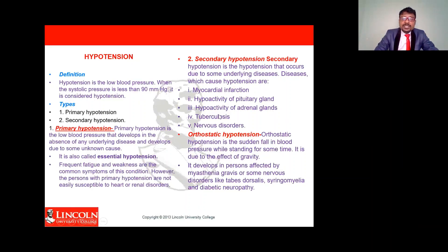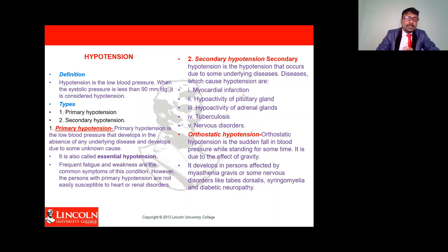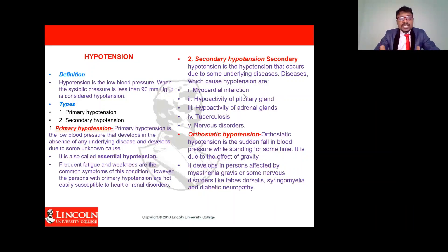Nervous disorders are also a cause — if there are any neurological disorders, there is a chance of getting hypotension, that is, decreased blood circulation. To summarize, just like hypertension, hypotension has two types: primary and secondary. In primary hypotension, people always experience tiredness and weakness, but if they take rest they return to normal.